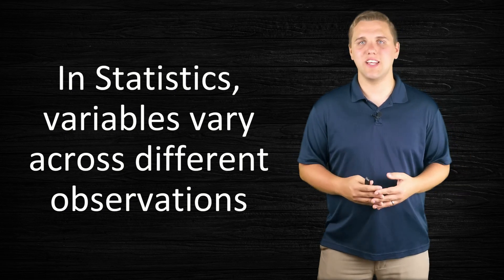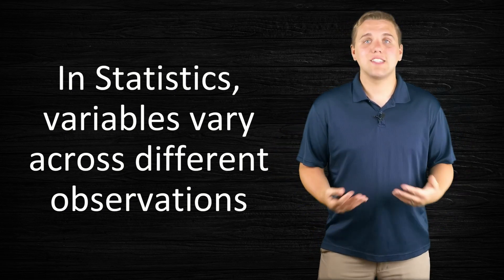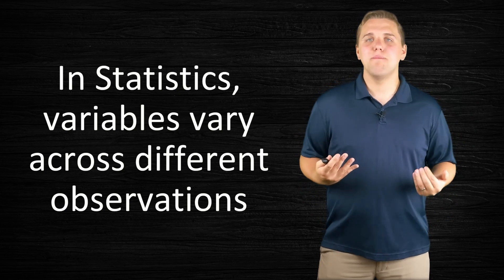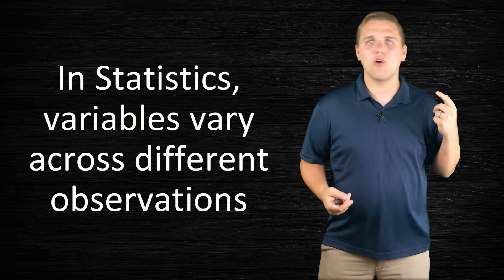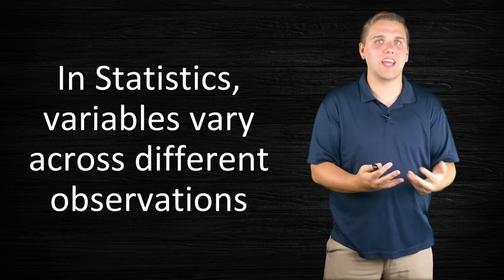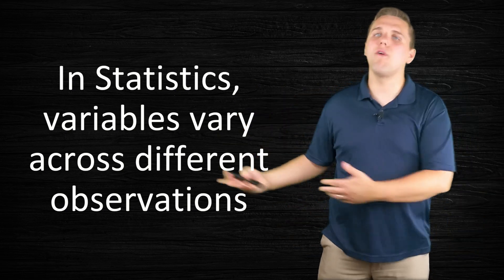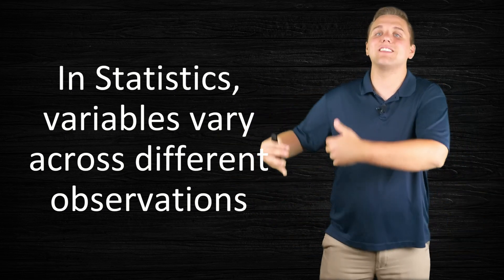For example, height is an example of a variable. It's not that my height is changing, because when you observe my height, you're not sticking a measuring tape and measuring my height every single second and noticing it's changing. You just do it once, and you move on to the next guy. You notice that the next guy has a different height.